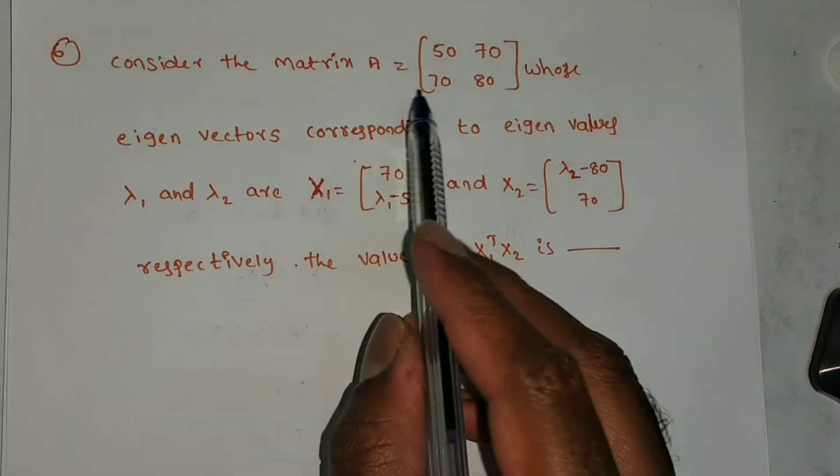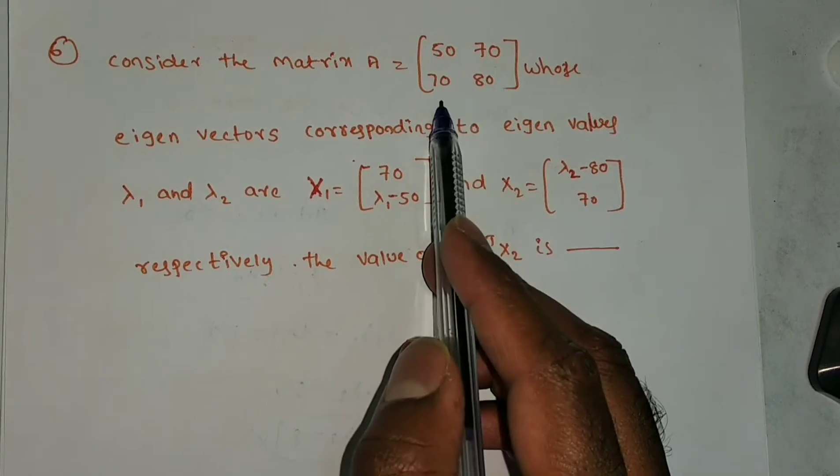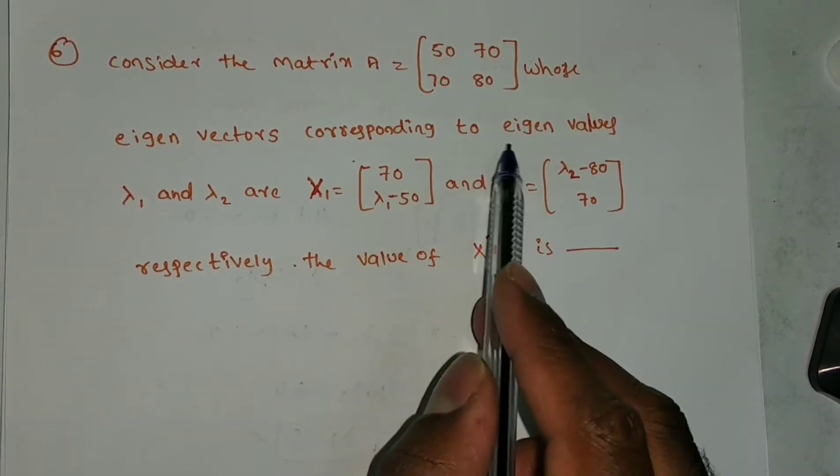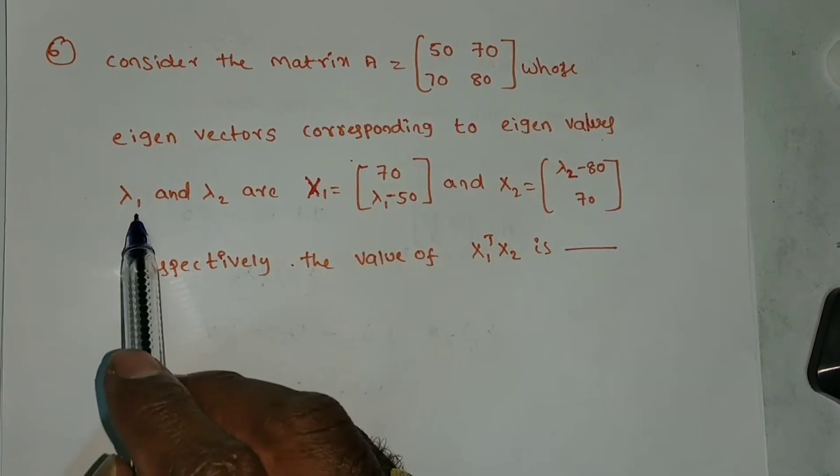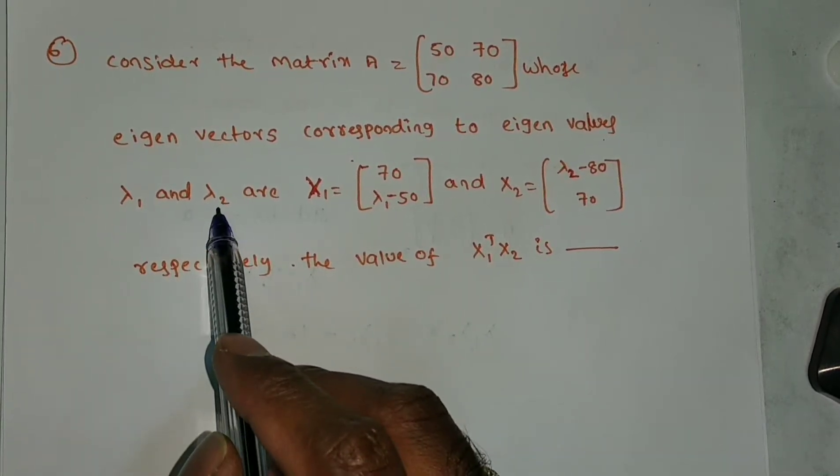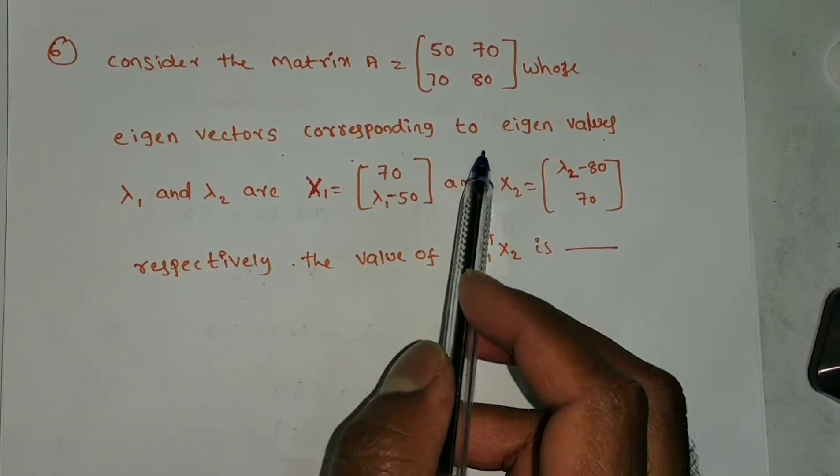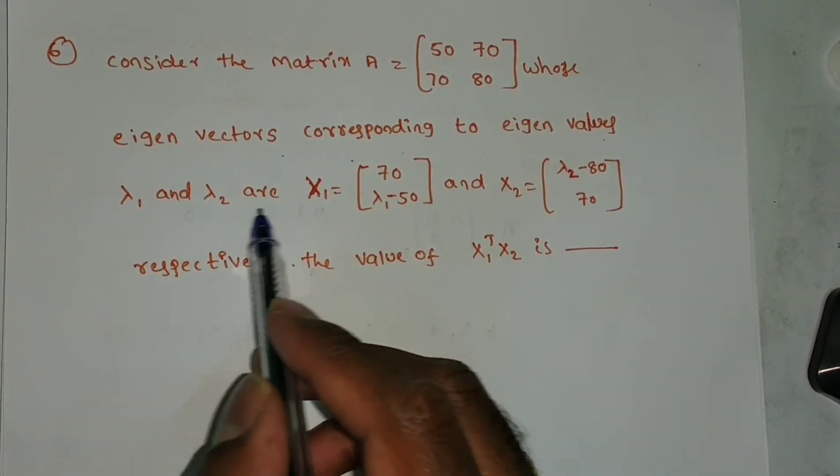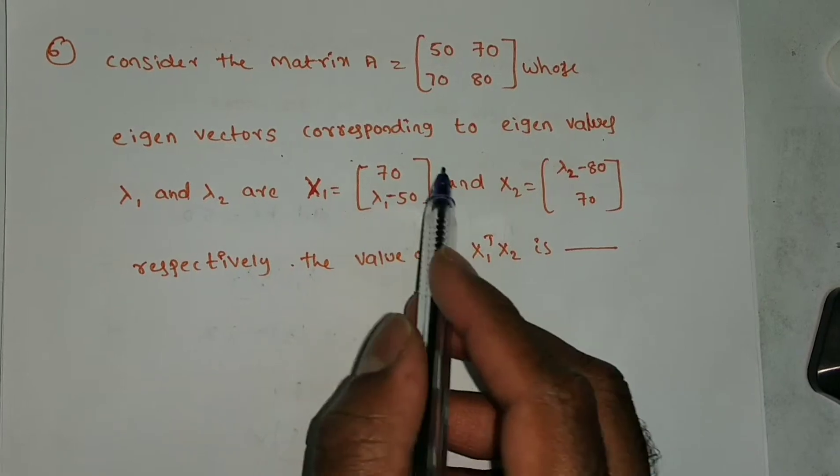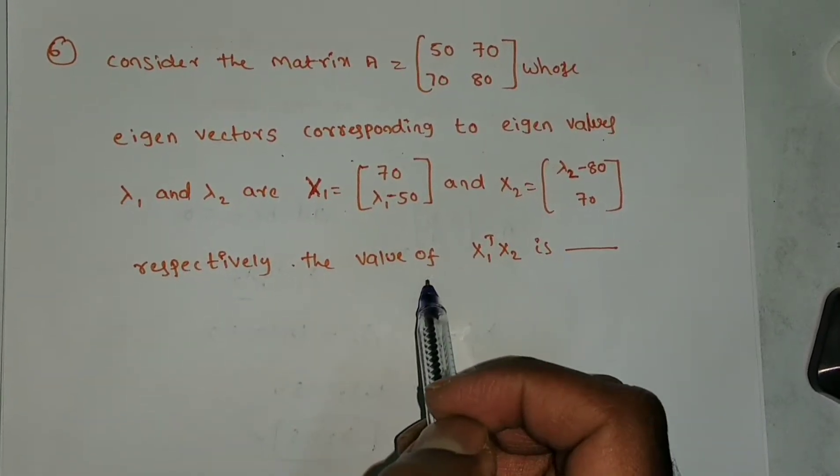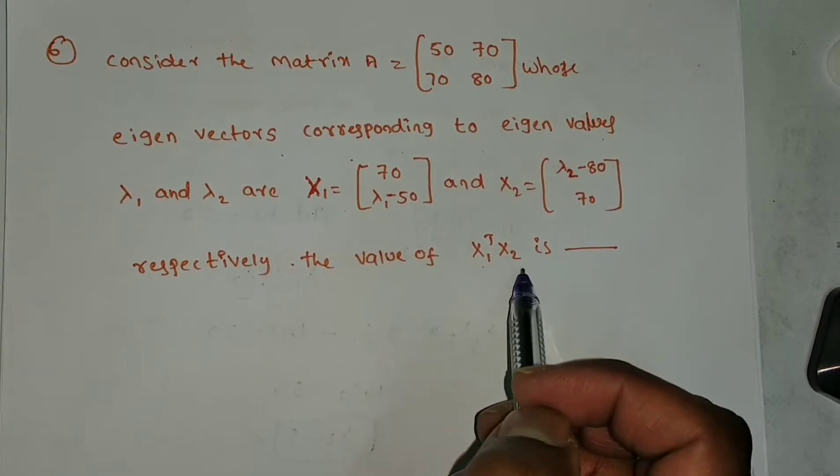Consider the matrix A equals [50, 70; 70, 80], a 2 by 2 matrix whose eigenvalues corresponding to eigenvectors λ₁ and λ₂ are x₁ and x₂ respectively. Then the value of x transpose Ax.